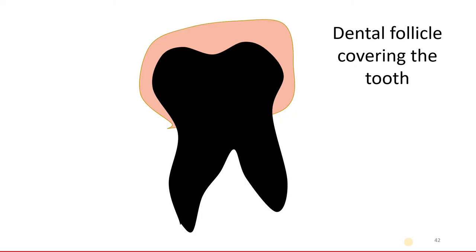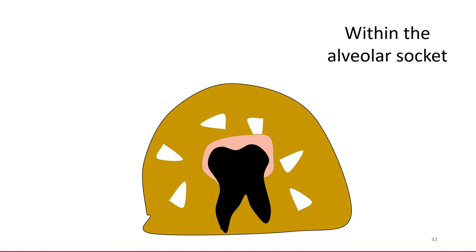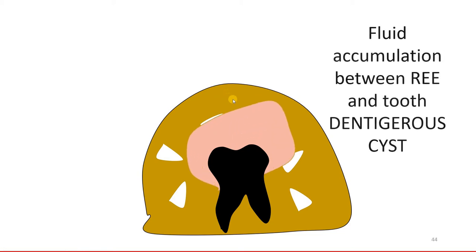Let's have a look at this animation which shows us how the dental follicle is present covering the tooth. The tooth is covered by a small dental follicle which is nothing but reduced enamel epithelium — the inner enamel epithelium and the outer enamel epithelium. If this tooth is present within the alveolar bone, the desmolytic property of the reduced enamel epithelium acts around the tooth and gives rise to eruption. But when this follicle grows and gives rise to cyst formation, we call it the dentigerous cyst.